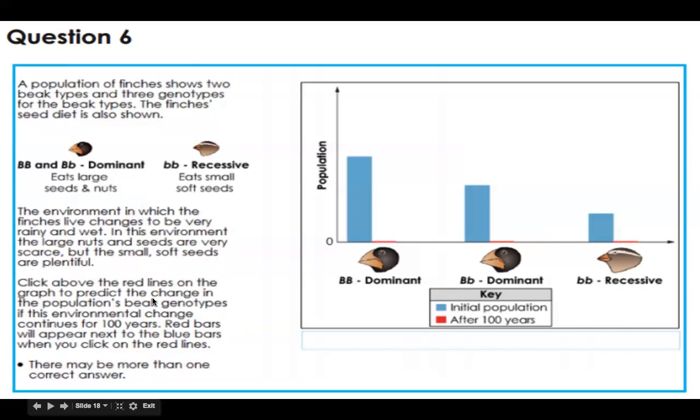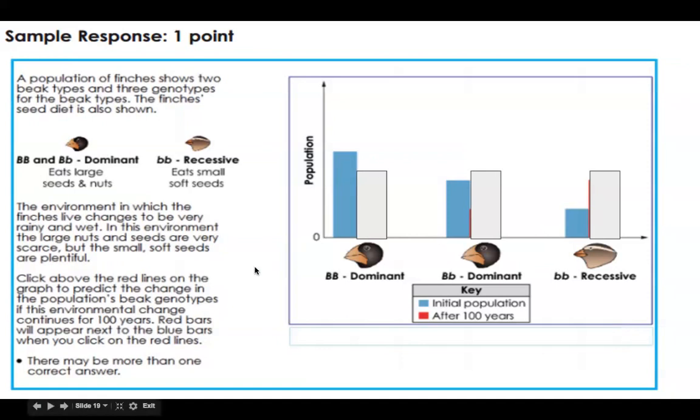Click above the red lines on the graph, here's the red lines, to predict the changes in the change in population of the genotypes. If this environment change continues for 100 years, red bars will appear next to the blue bars when you click on the red lines. And there can be more than one correct answer. So this is a slide show and it's just images. So I can't actually click on this, but if I could, when I click on the red line, I could make it higher. So let's see, how would this change?